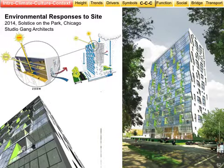This is another design by Jeanne Gang where the facade is organized in relation to solar angles — to allow solar gain in the winter but to prevent solar gain in the summer — in a residential tower.